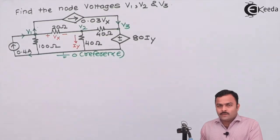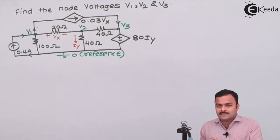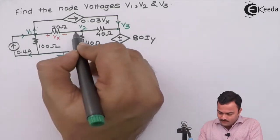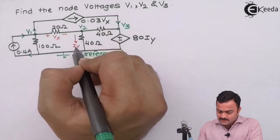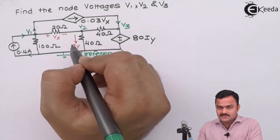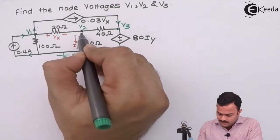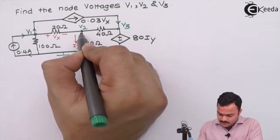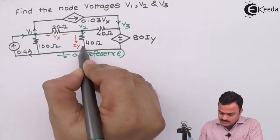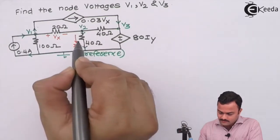Secondly, whatever current is given by them, we will maintain the current direction for that branch also the same. So Iy is given by them — remember this is a very important step — we have to mark the current in the same direction given by them.